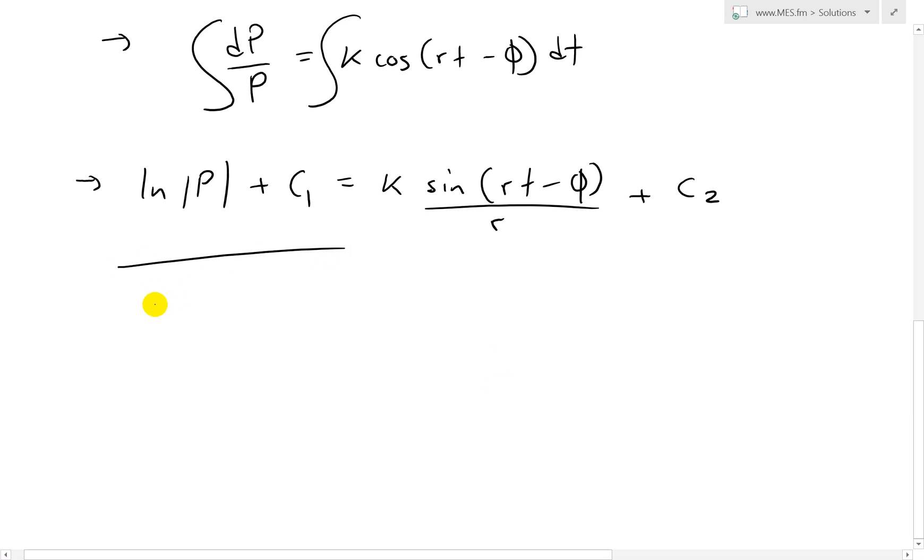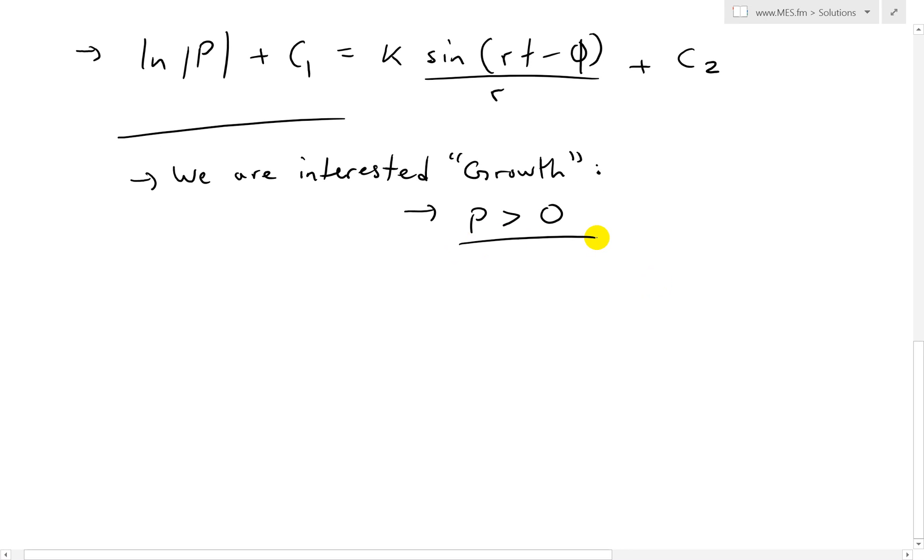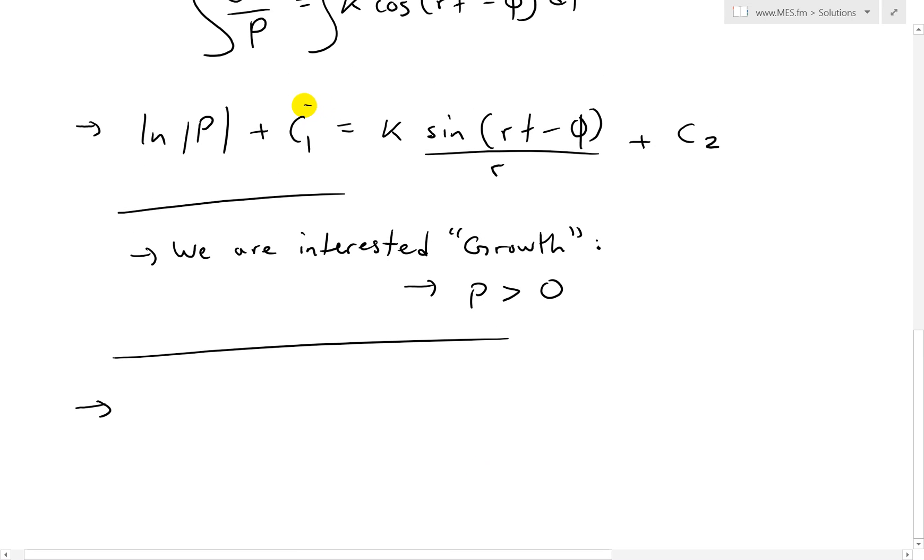Now we can simplify this further. Well, first of all, we are interested in growth, not decline or anything, interested in growth. So when we have this absolute value of sine of P, well, all we need to know is we only want to account for when population is greater than 0 and not some negative population, which in this example doesn't make sense. So we will assume P is greater than 0, the population is greater than 0. So then what we end up having, let's put this like that. So what we end up having, and also I'm going to move the C1 onto the other side and then subtract it from C2 and combine.